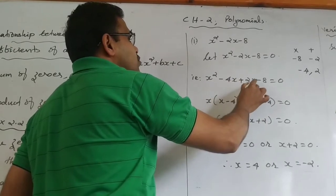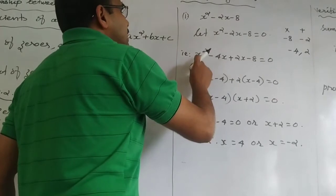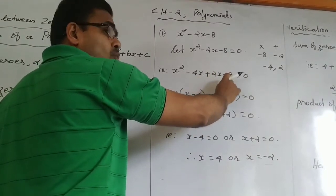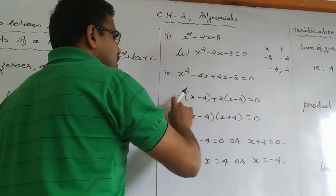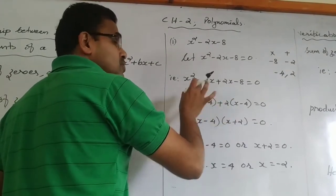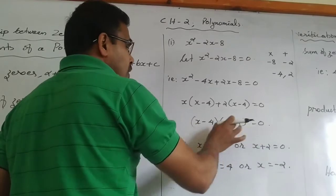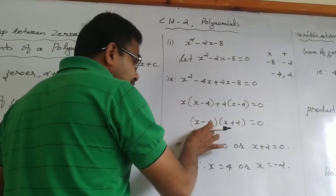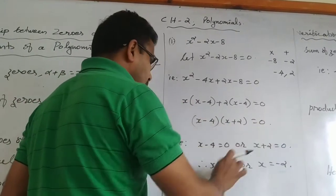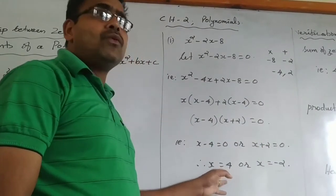That is x² − 4x + 2x − 8 = 0. From the first two terms we take x common: x(x − 4). From the last two terms we take +2 common: +2(x − 4). So x(x − 4) + 2(x − 4) = 0. Taking (x − 4) common: (x − 4)(x + 2) = 0. The product equals zero, so either x − 4 = 0 or x + 2 = 0. If x − 4 = 0, then x = 4. If x + 2 = 0, then x = −2. These are our two zeros.